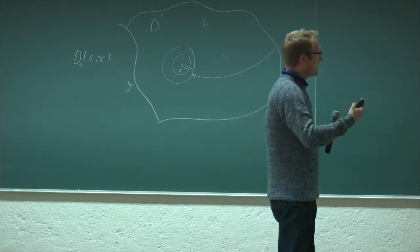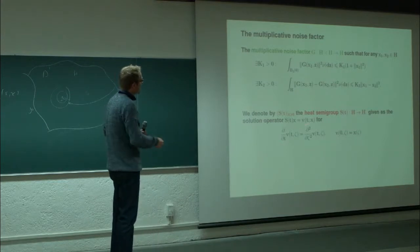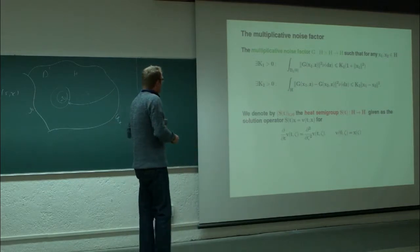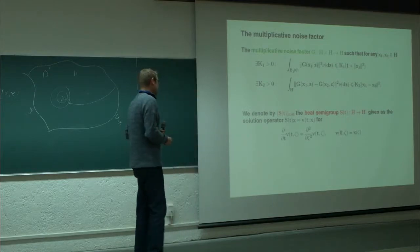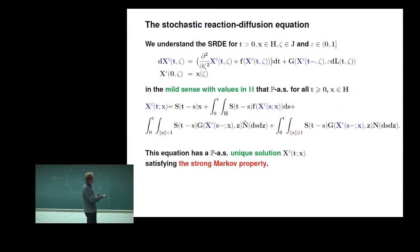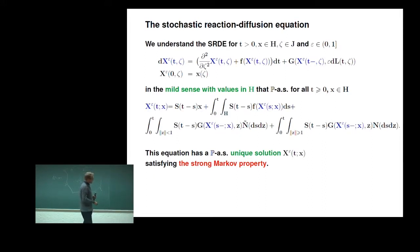We are interested in multiplicative perturbation, so we assume some Lipschitz and boundedness conditions on the multiplicative factor. In order to write down the mild solution, we introduce the heat semigroup according to the Dirichlet Laplace operator on this space. We can then write down the equation we're talking about, understanding the solution as the mild solution. The equation has a unique mild solution satisfying the strong Markov property, which will be very important.